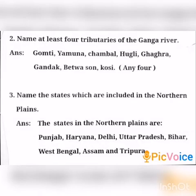Second question: Name at least 4 tributaries of the Ganga River. Answer: Gomati, Yamuna, Chambal, Hooghly, Ghaghra, Gandak, Vidwasan, Kosi. Write only any 4 rivers.